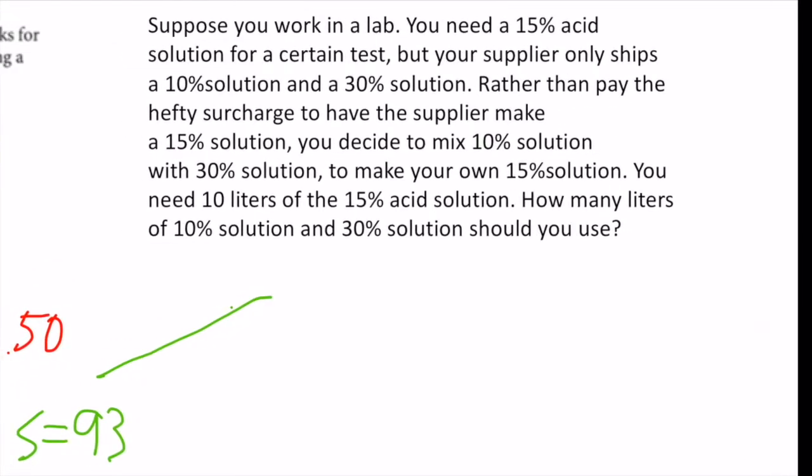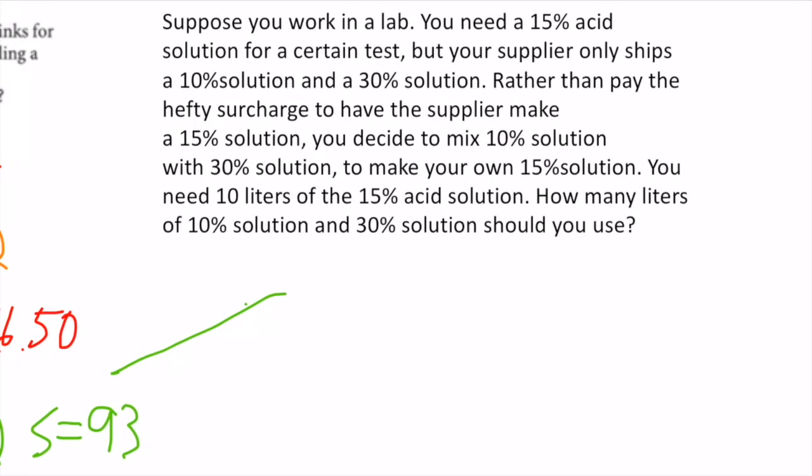The next example: suppose you work in a lab and need a 15% acid solution, but your supplier only ships 10% and 30% solutions. Rather than paying a surcharge, you decide to mix 10% and 30% to make your own. You need 10 liters of 15% acid — how many liters of each should you use?